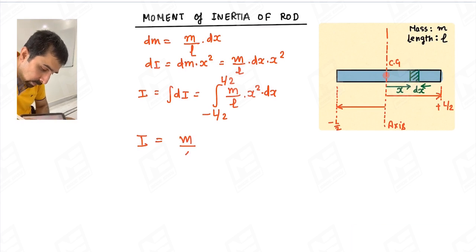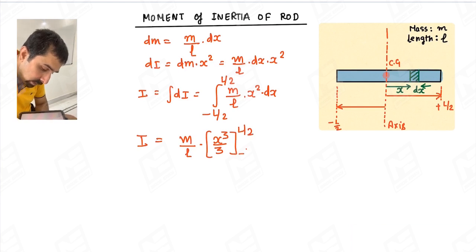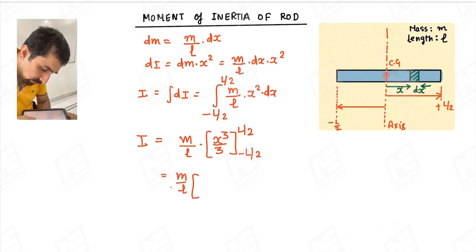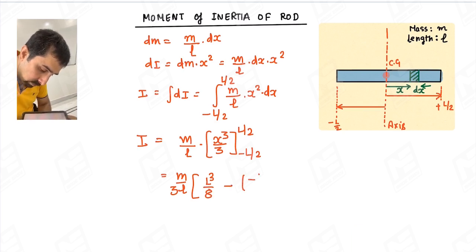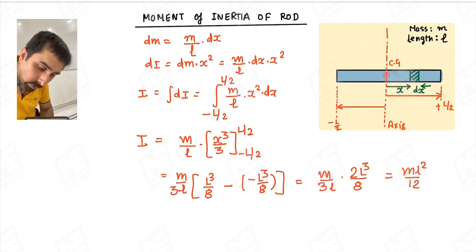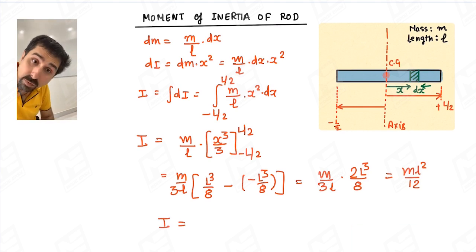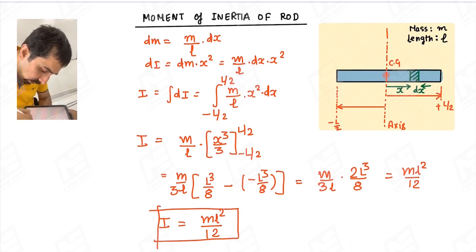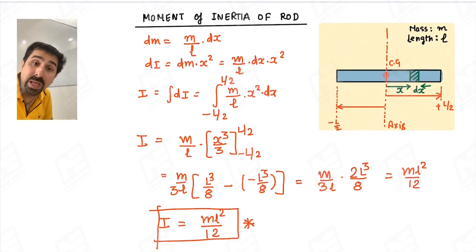So I equals m upon l, brought outside, and the integration gives x cubed by 3, evaluated with upper limit l/2 and lower limit minus l/2. This gives m upon 3l times the quantity l cubed by 8 minus of minus l cubed by 8, which equals m upon 3l times 2l cubed upon 8.